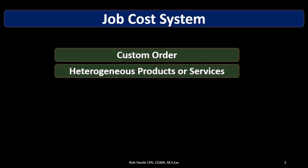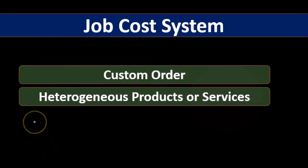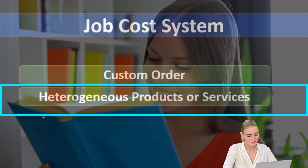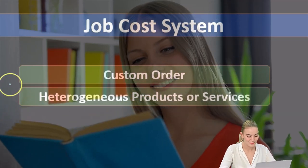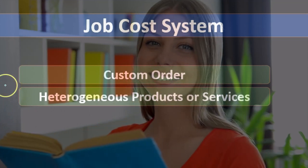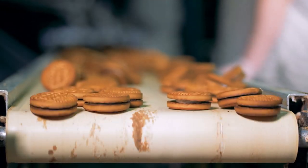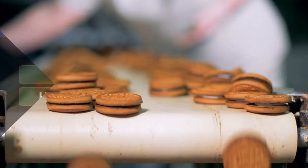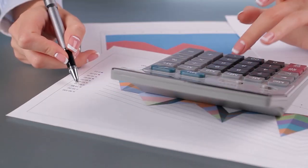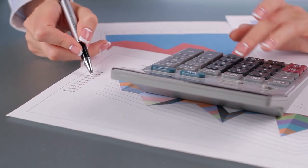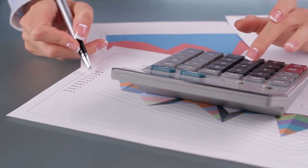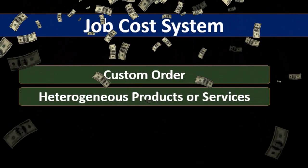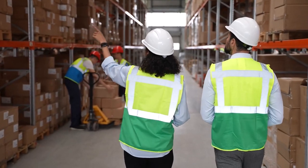The next characteristic is heterogeneous products or services — meaning they are different. Heterogeneous is the opposite of homogeneous; heterogeneous means different, homogeneous means the same. The types of things we're producing are not all exactly the same, which follows from the idea that they're custom. Because of those differences, we cannot evenly allocate costs. If one guitar is a lot more detailed than another, or one construction job is larger than another, we can't allocate the same cost to those jobs.